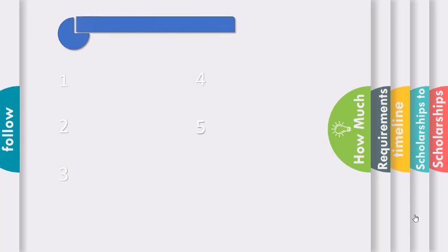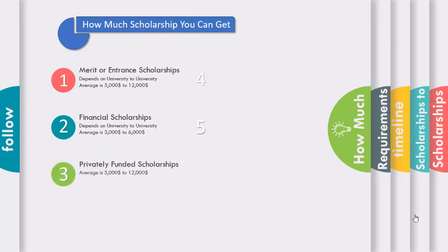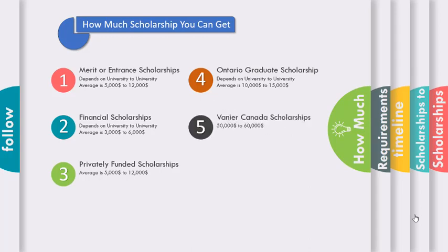Regarding scholarship amounts: Merit or Entrance Scholarship depends on the university, but the average is $5,000 to $12,000. Financial Scholarship average is $3,000 to $6,000. Private Funded Scholarship average is $5,000 to $12,000. Ontario Graduate Scholarship average is $10,000 to $15,000. And the Vanier Canada Graduate Scholarship is $50,000 to $60,000 — a huge one!